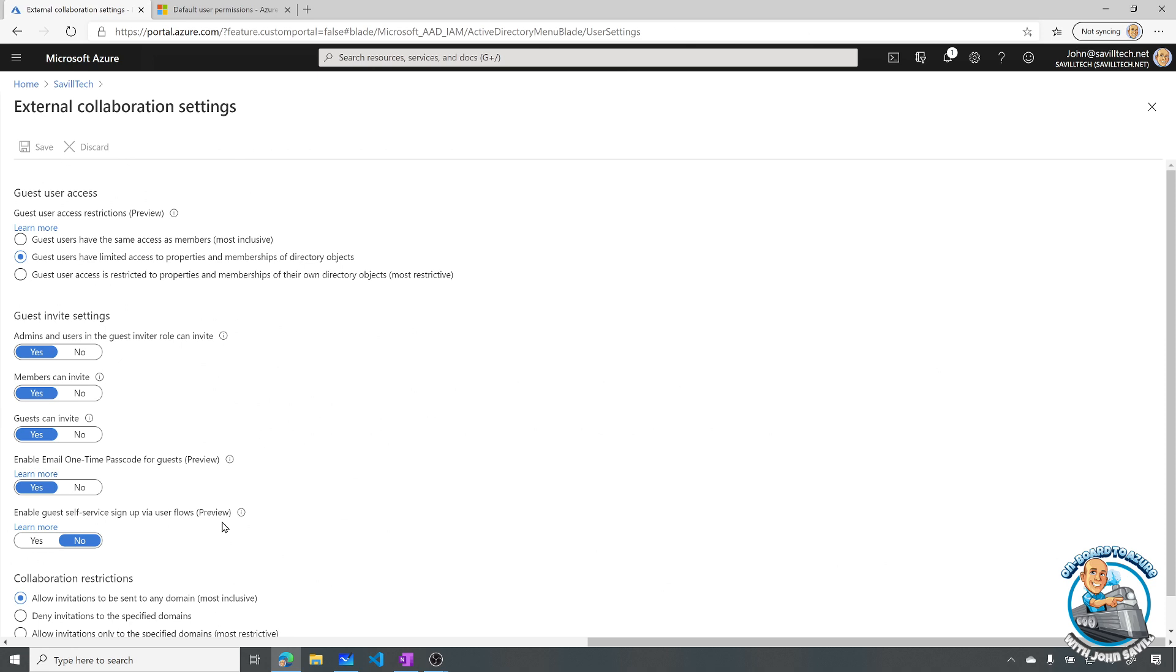Now this opens up a lot of different things. You'll see there's a whole bunch of settings here around guest user invites. Who can invite guests. Can guest invite guests. Do I enable this one time passcode. When that guest is part of an organization that's not Gmail. It's not a Microsoft account. It's not Azure AD. It doesn't support SAML. I don't want to just send them a one time passcode. That proves they still have access to a mailbox. So it kind of proves they're still at that other place. Do I want guest self sign up. But I'm going to focus on these options up here.